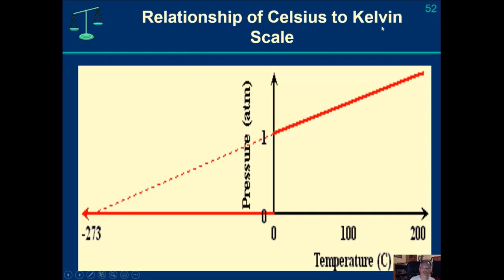The relationship of the Celsius to Kelvin scale comes from an experiment done quite a while ago. You take a gas, begin to reduce the temperature, and measure the pressure as you reduce the temperature. After enough iterations of that experiment, you learn there is a linear relationship.